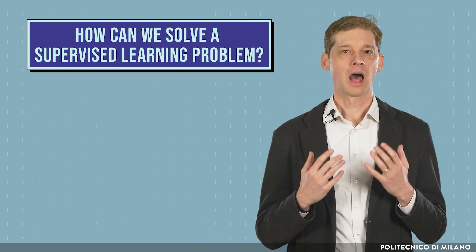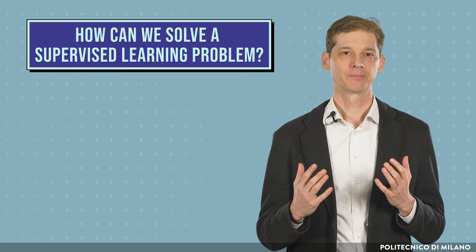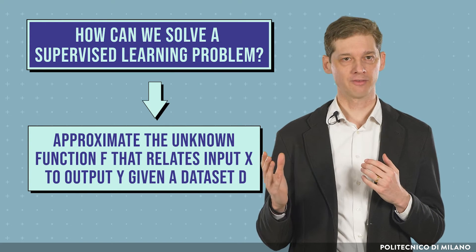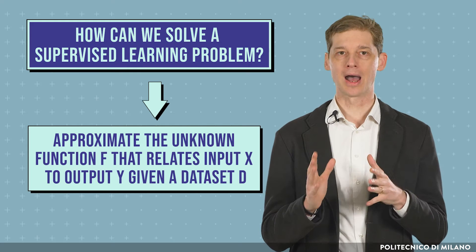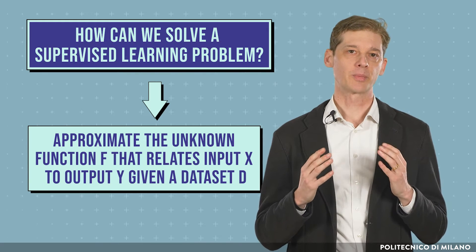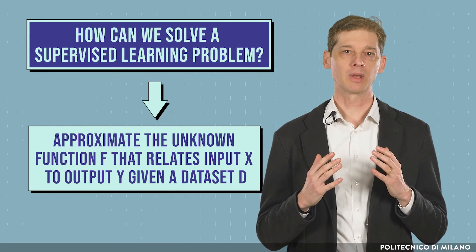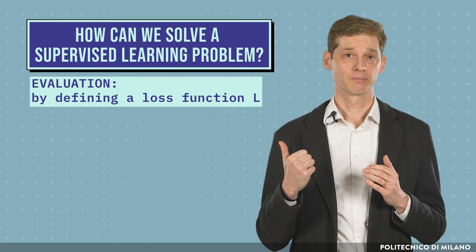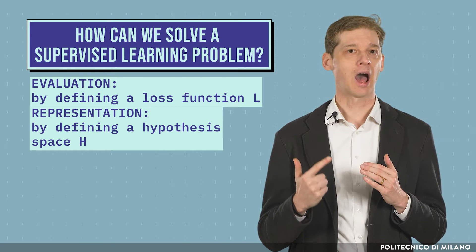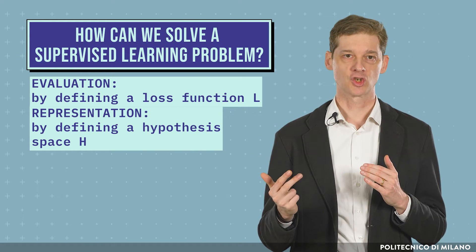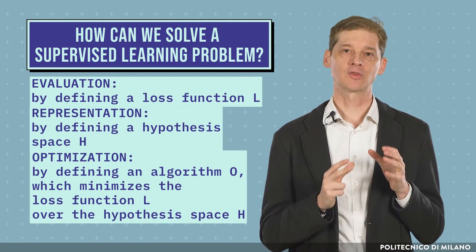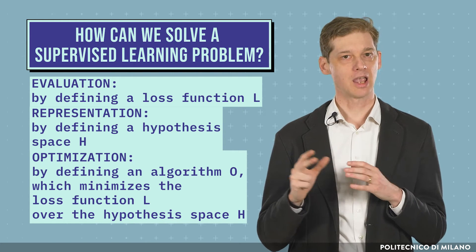How can we solve a supervised learning problem? Our goal is to approximate the unknown function f that relates input x to output y, given a dataset d. To solve a supervised learning problem, we need to define three main components: Evaluation, by defining a loss function L; Representation, by defining a hypothesis space H; and Optimization, by defining an algorithm O which minimizes the loss function L over the hypothesis space H.